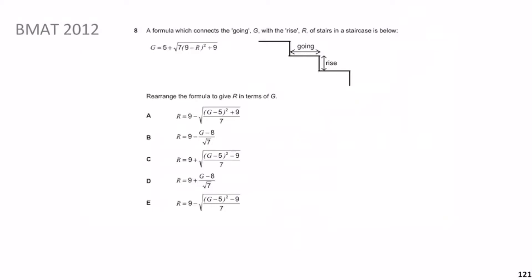Now we move on to the next question: BMAT 2012 question 8. There's a formula which connects the going G with the rise of stairs in a staircase. You have G equals 5 plus the square root of an expression, and it says rearrange the formula to give R in terms of G. Pause the video, give yourself a minute, and be back after that.